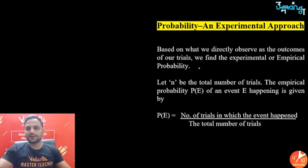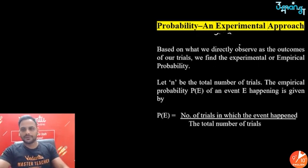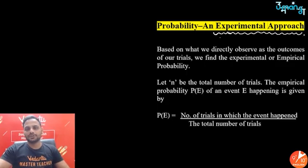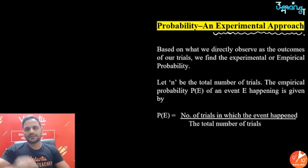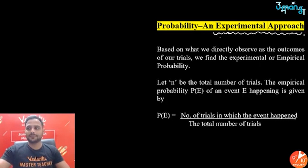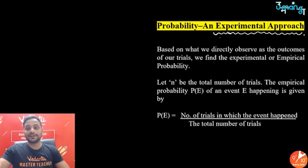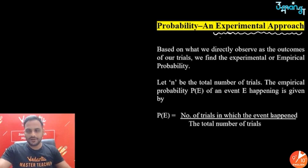In grade 9 we use the experimental approach to probability. You will be given the results of an experiment conducted some number of times — 100 times, 50 times, whatever. Based on those results, you calculate the probability if you do the trial one more time. For example, if I tossed a coin 100 times and got heads 60 times and tails 40 times, that is why it's called experimental probability. The formula is: number of trials in which the event happened divided by total number of trials.